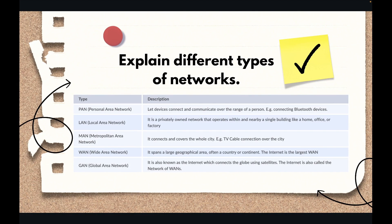The next question is: explain different types of networks. We have PAN, LAN, MAN, WAN, and GAN. PAN stands for Personal Area Network, LAN for Local Area Network, MAN for Metropolitan Area Network, WAN for Wide Area Network, and GAN for Global Area Network. PAN covers devices connected via Bluetooth from person to person. LAN is mainly for home, office, or factory. MAN connects two different cities through a cable or network connection. WAN covers two different geographical locations or countries, and GAN is communication between satellites across the globe.